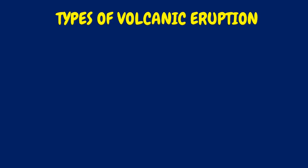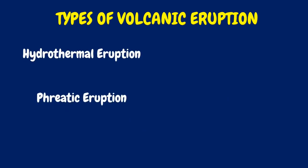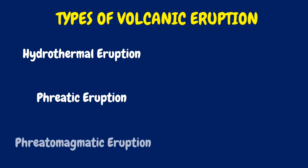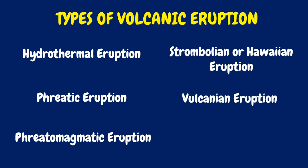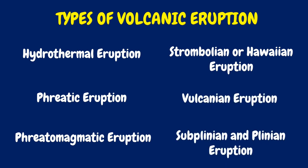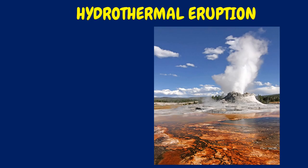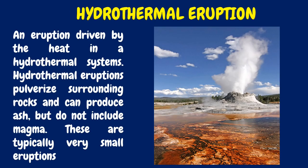What are the different types of volcanic eruption? These include hydrothermal eruption, phreatic eruption, phreatomagmatic eruption, Strombolian or Hawaiian eruption, Vulcanian eruption, and Sub-Plinian and Plinian eruption. A hydrothermal eruption is driven by the heat in the hydrothermal systems. Hydrothermal eruptions pulverize surrounding rocks and can produce ash, but do not include magma. These are typically very small eruptions.